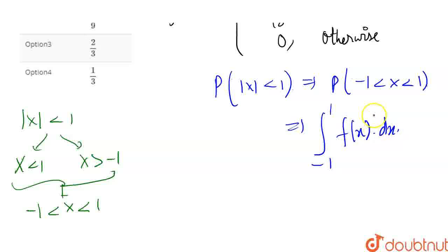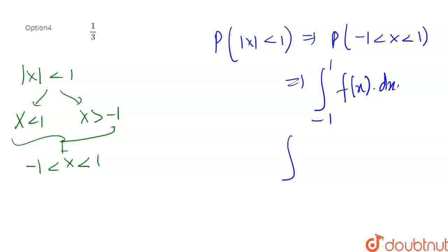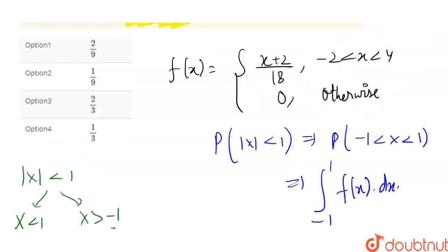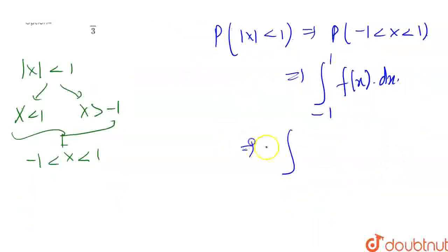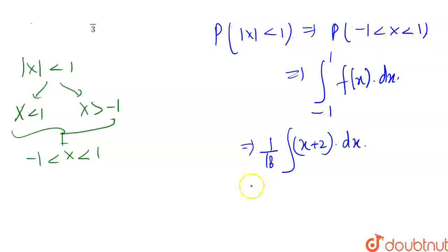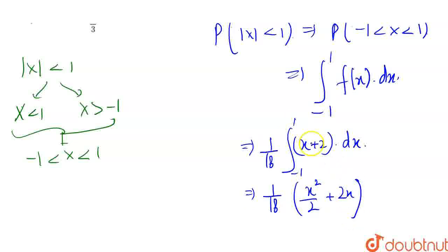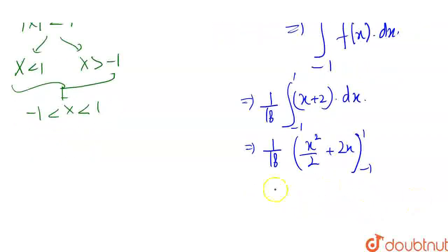We integrate f(x) = (x + 2)/18 with respect to x, with limits from minus 1 to 1. So we compute the integral of (x + 2)/18 dx, which gives us x²/2 plus 2x, all divided by 18, evaluated from minus 1 to 1.